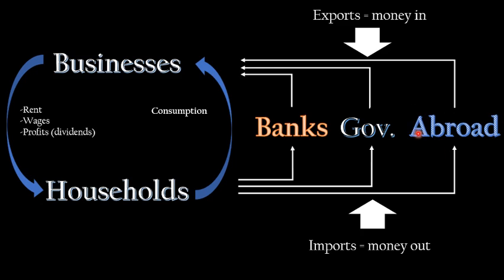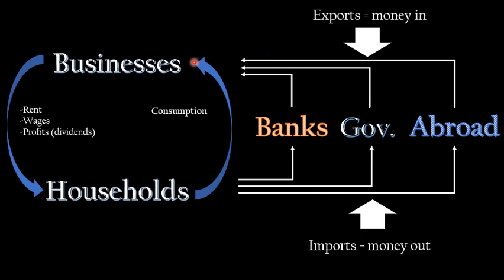There is a flow of money out from the UK economy to businesses and consumers abroad when we import stuff to the UK. The good comes into the UK as an import, but we need to pay for it, and therefore money leaves the UK. But when British businesses export things to consumers or foreign businesses, we sell them stuff and money comes into the UK from those exports.